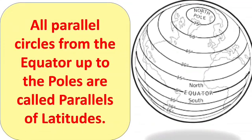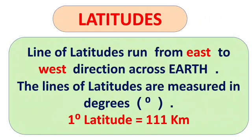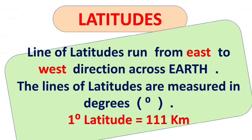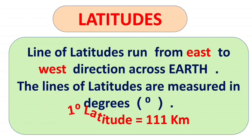Now we will talk about latitudes. Our earth is like a sphere. So if you draw a line on a sphere from the center, starting from one point and ending at the same starting point, it will make a circle. If you make more parallel lines, they will look like latitudes. All parallel circles from the equator up to the poles are called parallels of latitudes. Lines of latitude run from east to west direction across the earth. They are measured in degrees, and one degree of latitude is equal to 111 kilometers.